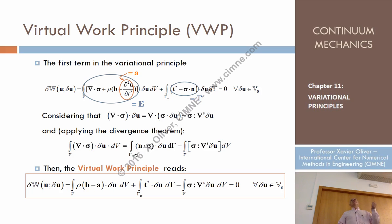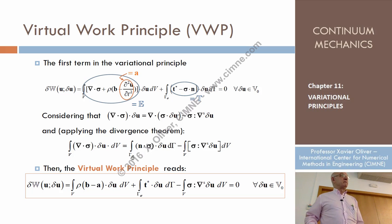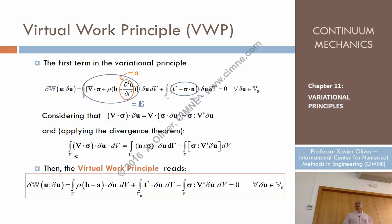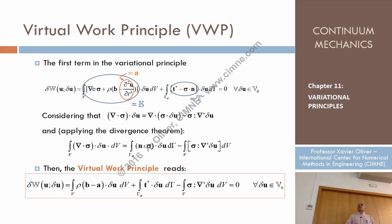So it's n sigma delta u, integrated on all the boundary. But since on part of the boundary gamma u, delta u is equal to zero, that is reduced to gamma sigma — the part of the boundary where delta u is different from zero — and that remains as it is. So, finally, this mathematical operation is equivalent to an integration by parts.